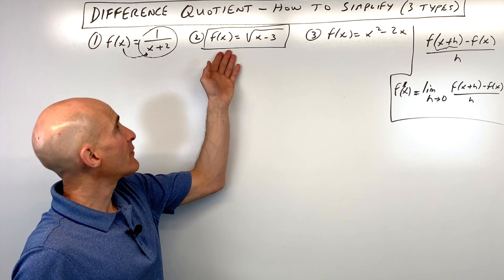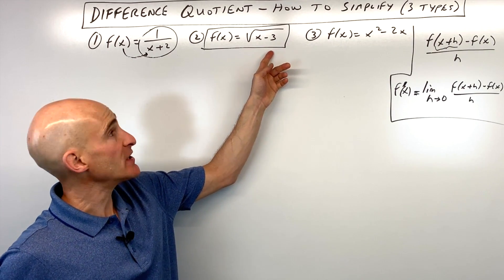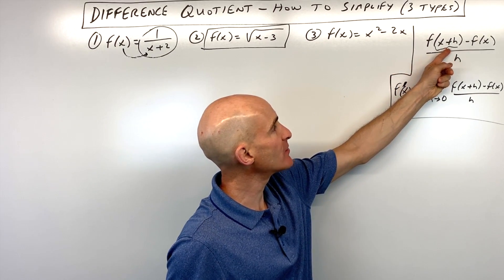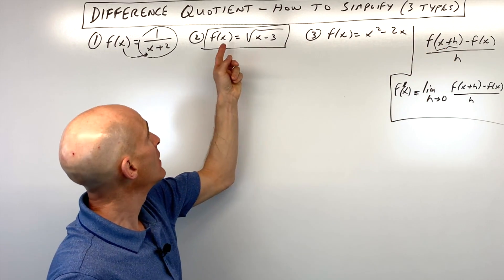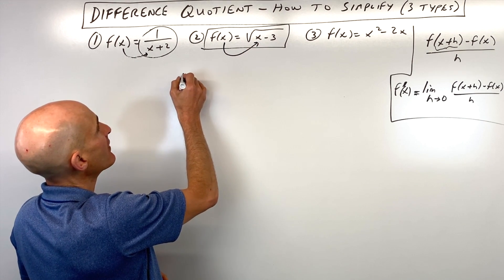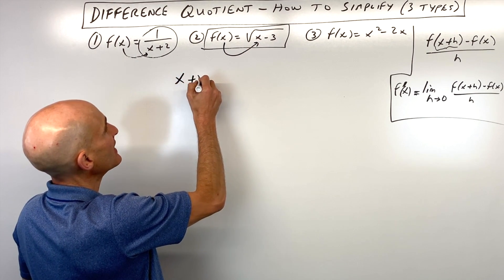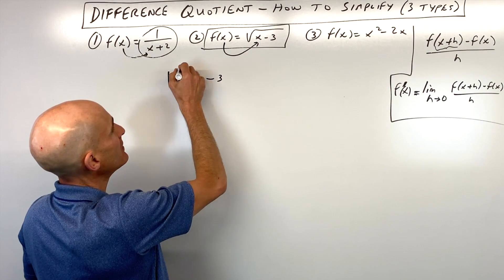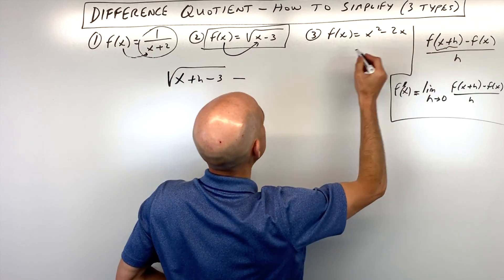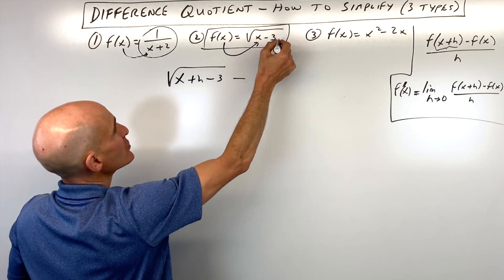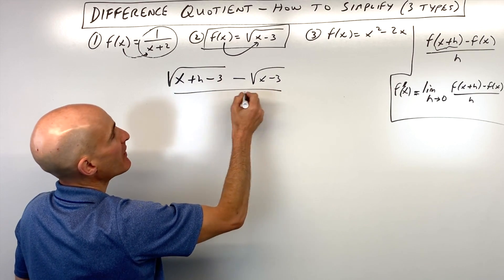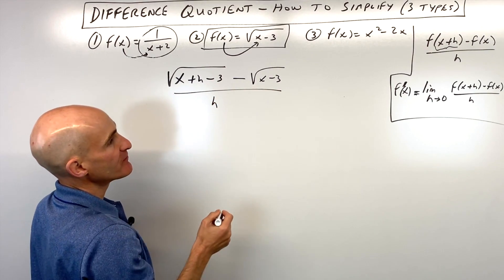Number two: f of x equals square root of x minus three. Same process — whatever's in the parentheses goes in for x on the right. So we have square root of x plus h minus three, minus f of x, which is square root of x minus three, all divided by h.